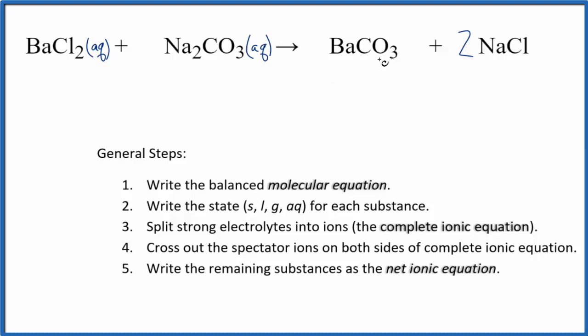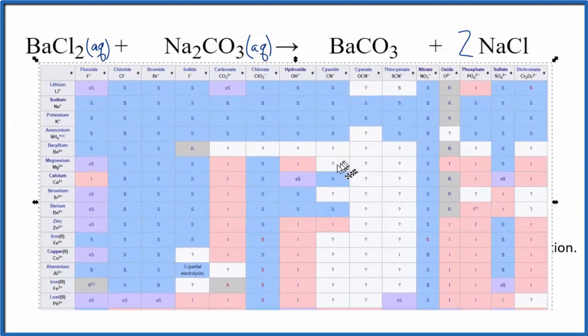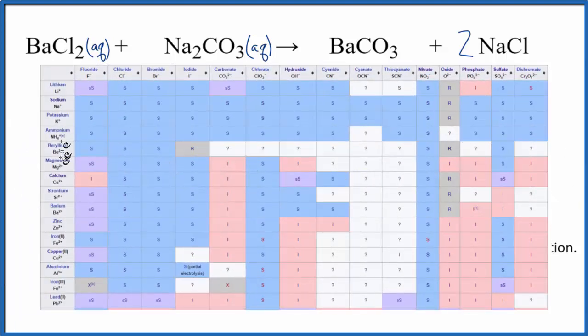Barium carbonate, carbonates are often soluble, but let's look this up on a solubility table here. So on our table, we find barium, which is right here, and then we're looking at carbonate here. We go across and down, and we see that I there. That I means it's insoluble.